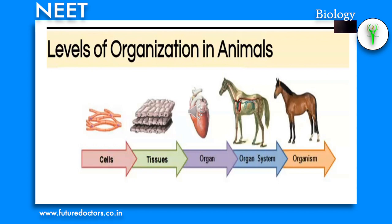The next is the tissue level, where cells performing the same function are arranged into tissues. Example: cnidarians. The next is the organ level, found in platyhelminthes and higher phyla, where tissues are grouped together to form organs, each specialized for a particular function. The next is the organ system level, found in animals like annelids, arthropods, molluscs, echinoderms and chordates, where organs have associated to form functional systems, each concerned with a specific physiological function.